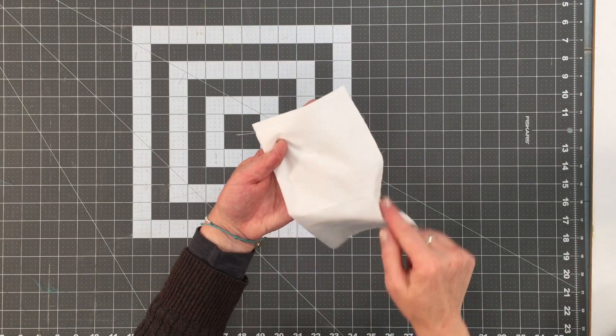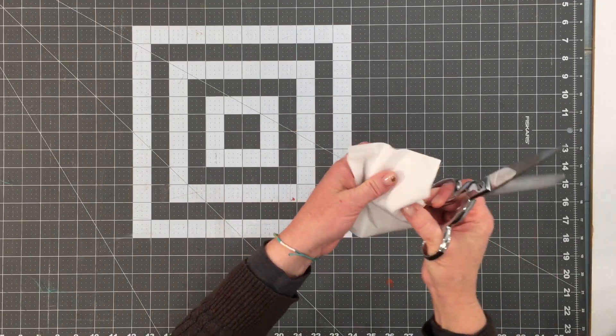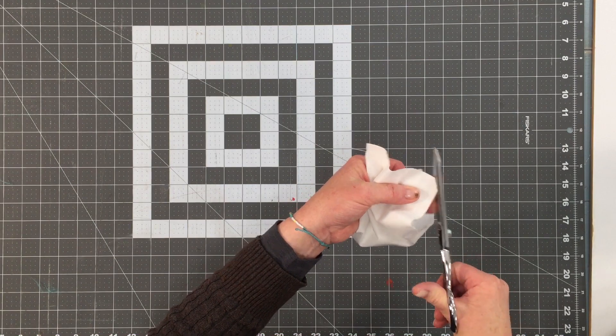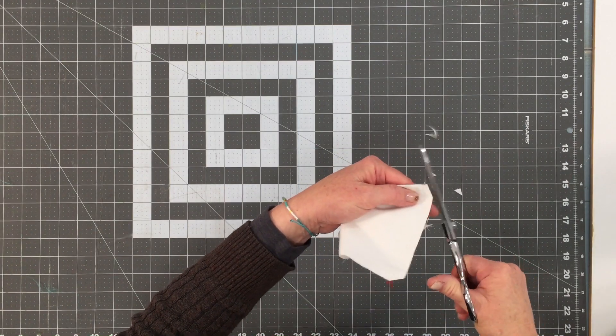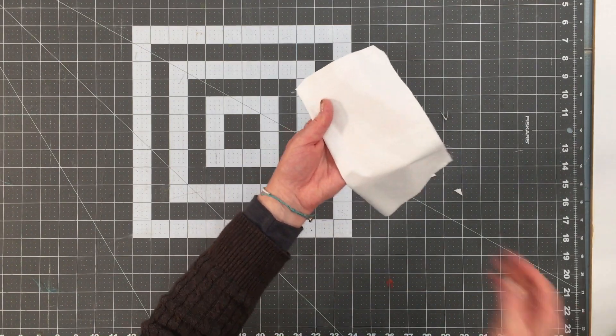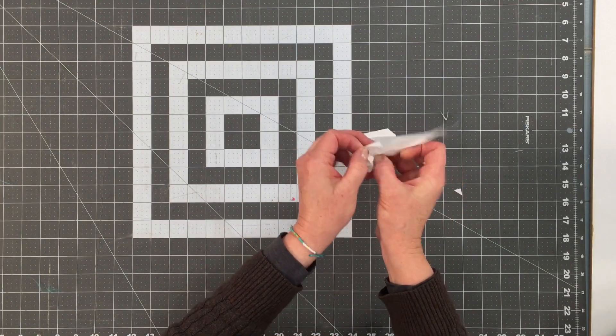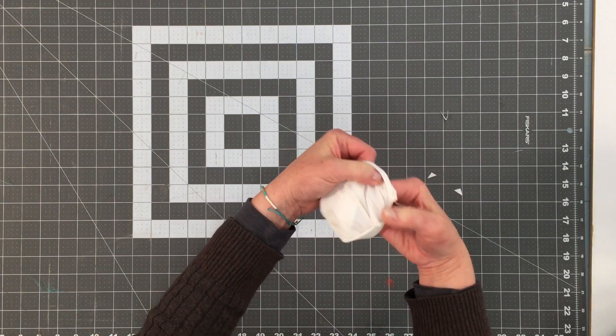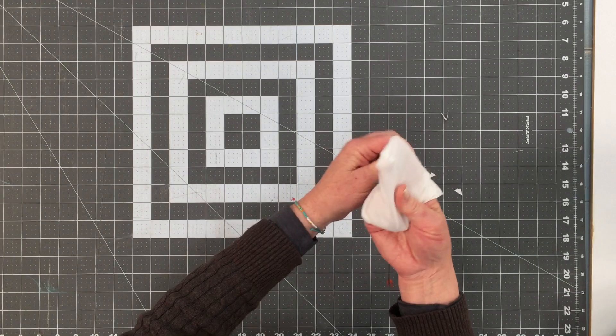So I've sewn my seam. I'm going to clip that corner and this inner corner and turn it right side out. Just poke it with your fingers.